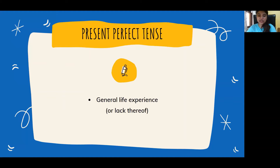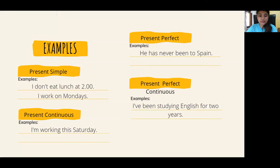The third tense is the present perfect tense. We use it for a general life experience — or lack of experience — that you had in the past, but not at a specific point in time. The specific point in time is not important here, or maybe we don't know. For example, 'He has never been to Spain' — meaning no life experience of going to Spain. We need to attach has or have before our past participle verb.